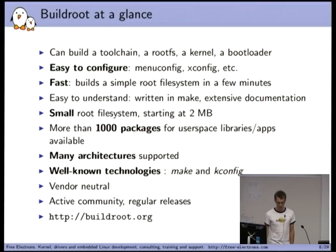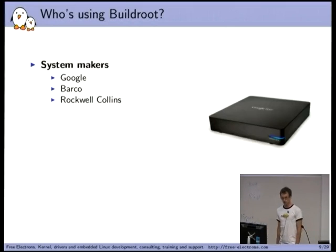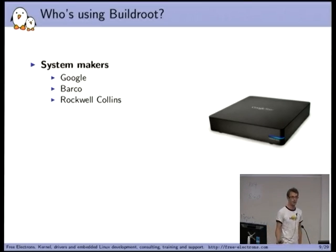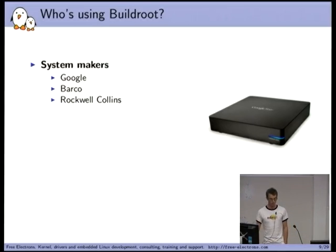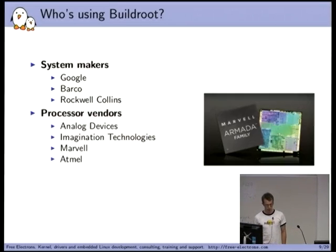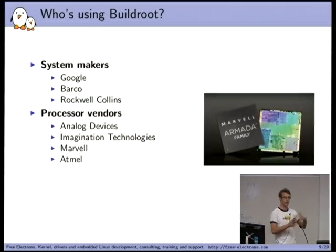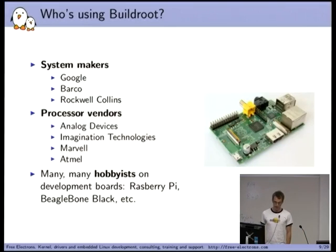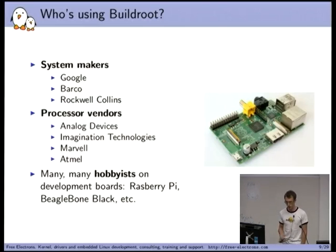Buildroot is also vendor-neutral — it's not driven by one single company but by an open source community — and it's probably the oldest build system still in active use, created in 2001. Who's using Buildroot? Google uses it for Google Fiber boxes. Barco, an international visualization systems company, uses it. Rockwell Collins in the defense and aerospace industry uses it and even contributes to it. Many processor vendors use Buildroot as their BSP — Analog Devices for Blackfin, Imagination Technologies for MIPS, Marvell for ARM — and many hobbyists use it for Raspberry Pi and BeagleBone Black.